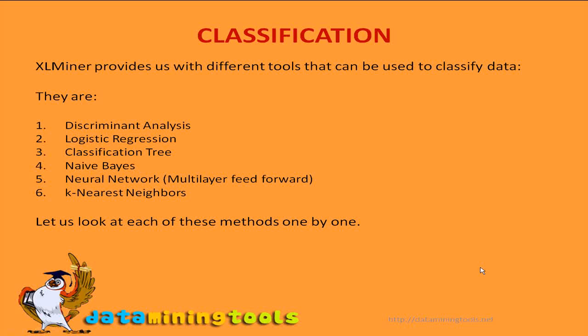Excel Miner provides us with different tools that can be used to classify data. They are: 1. Discriminant Analysis, 2. Logistic Regression, 3. Classification Tree, 4. Naive Bayes, 5. Neural Network, and 6. K-Nearest Neighbors.